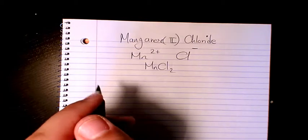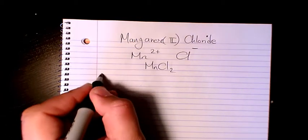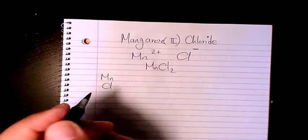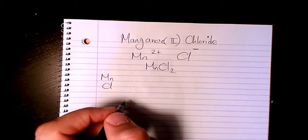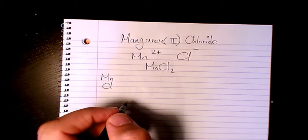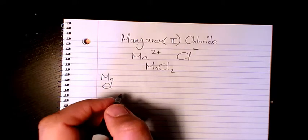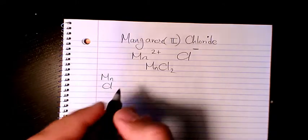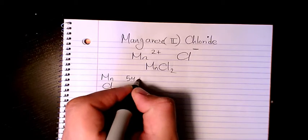First of all I need to list all the elements, which is just manganese and chlorine. And then I need to find out the atomic mass of each of these elements. Manganese is 54.938.